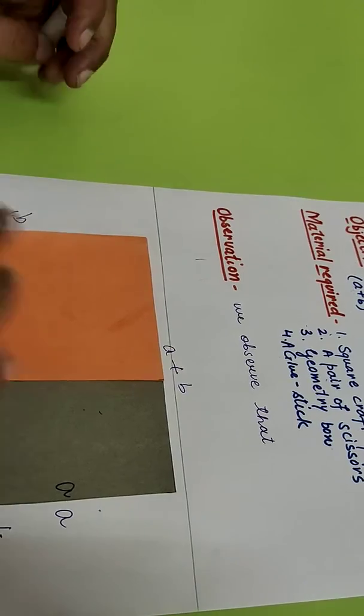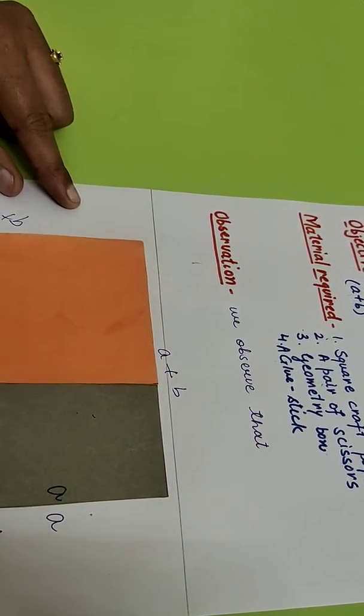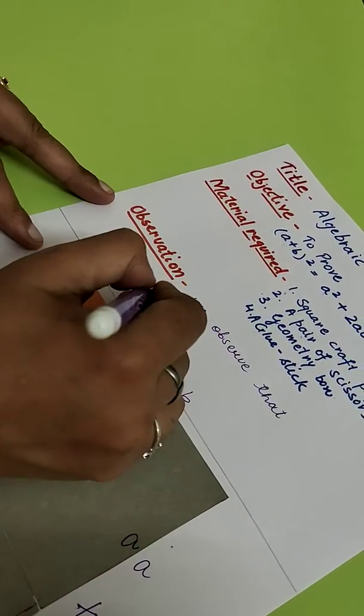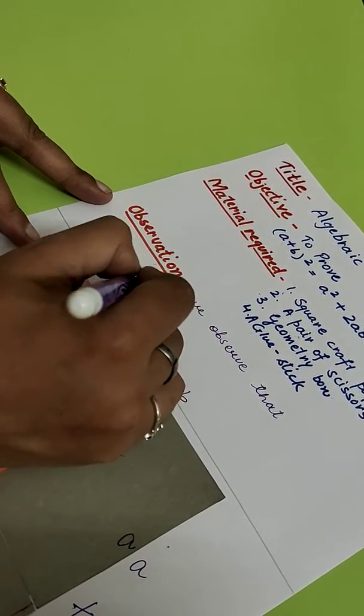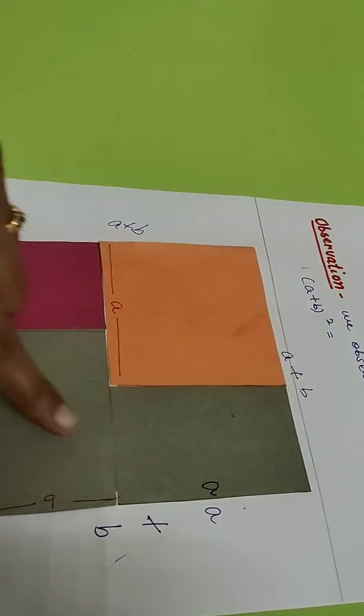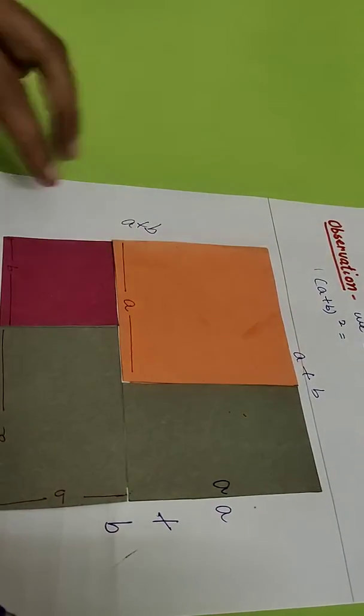And you can write now the observation. What we have observed? That the area of the bigger square that we have made, that is A plus B whole square. How we have made the bigger square? By using the 4 pieces. So what are the 4 pieces?